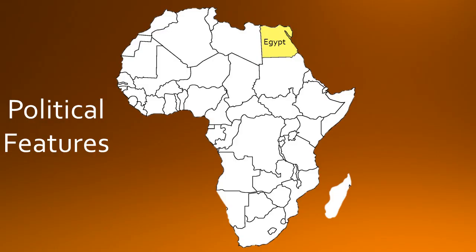The first country is Egypt. It is on the northeastern part of Africa. The Nile River ends here and its capital is Cairo.